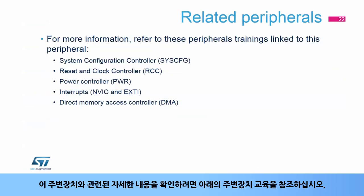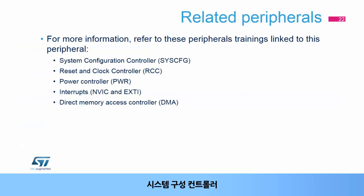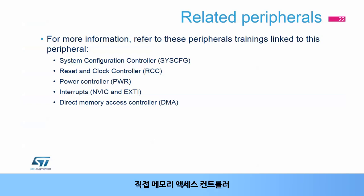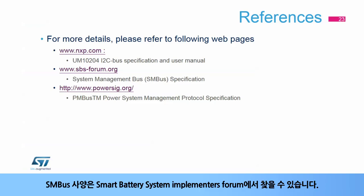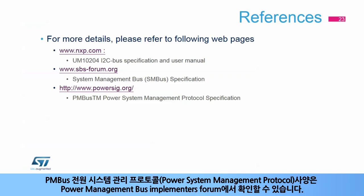For more information related to this peripheral, you can also refer to these peripheral trainings: System Configuration Controller, Reset and Clock Controller, Power Controller, Interrupts Controller, and Direct Memory Access Controller. For more details, please refer to the I2C bus specification and user manual from the NXP website. The SMBus specification can be found in the Smart Battery System Implementers Forum. The PMBus Power System Management Protocol specification can be found in the Power Management Bus Implementers Forum.